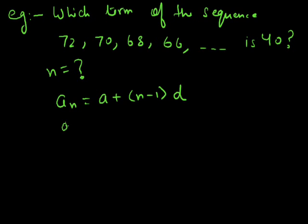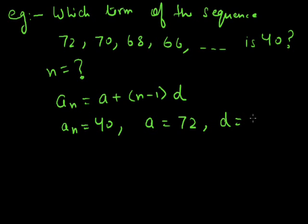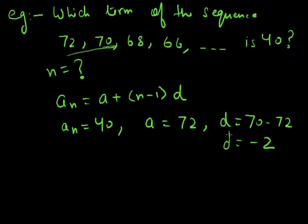The nth term is given as 40. The first term a is 72. To find the common difference, we take any two consecutive terms. Taking the first two terms: 70 minus 72 equals minus 2. So the common difference d is minus 2.